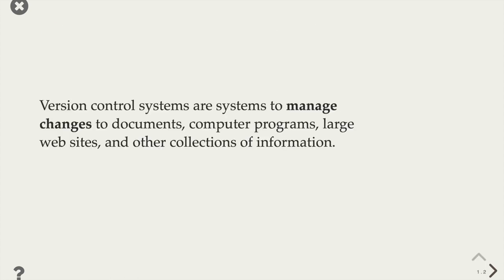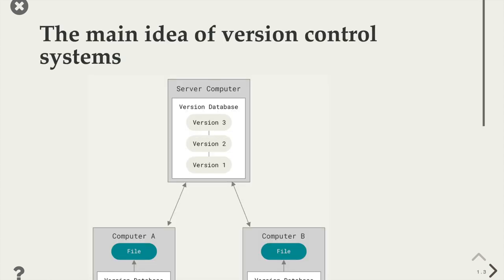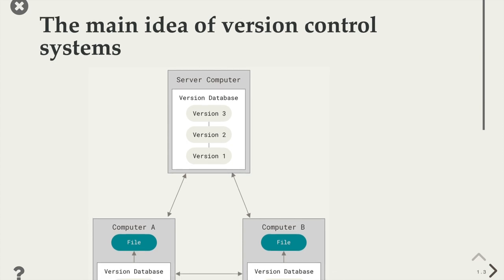Version control in general is a software tool for managing changes to any kind of files you might have — a collection of files in a folder, whether that's software or documents, anything you can store as files and folders, you can use a version control system to track. The main idea is you have some collection of files and you keep track of those changes. For a given project, you'll often have some central canonical storage of the true main version of whatever it is you're keeping track of.